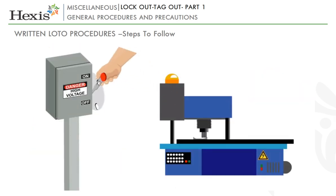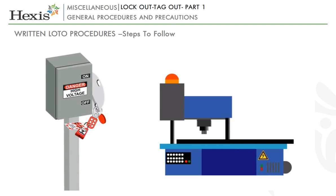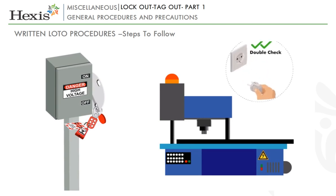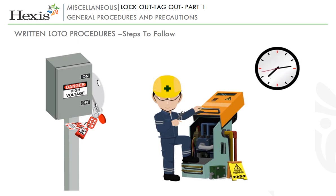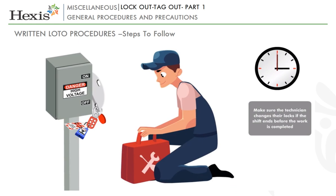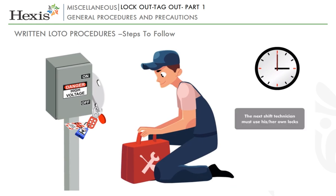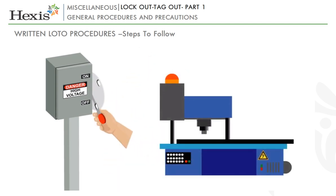Step 3: Double check if the switch or valve still operates even after it is locked. Step 4: Perform the maintenance or repair activity as per the plan. Step 5: Make sure the technician changes their locks if the shift ends before the work is completed. Step 6: The next shift technician must use his or her own locks. Step 7: Once the work is completed, ensure all the locks and tags are removed. Step 8: Switch on the machine or switch or valve for its operations.